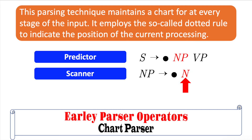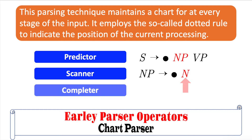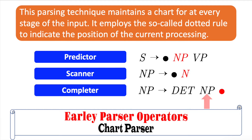When its dot has reached the right end of the rule, the completer is applied to a state. The presence of such a state represents the fact that the parser has successfully discovered a particular grammatical category over some span of the input. Its purpose is to find and advance all previously created states that were looking for this grammatical category at this position in the input. New states are then created by copying the older state, advancing the dot over the expected category, and installing the new state in the current chart entry.